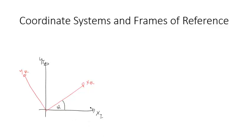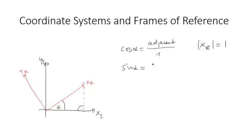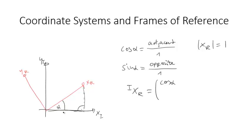Let's say there is an angle alpha between the two x-axes. Now you have a triangle with a right angle here, and you can write down the relationships. Cosine of alpha is the adjacent divided by the hypotenuse, which is of length 1 because these are unit vectors, so |xr| is 1. And sin(alpha) is the opposite divided by the hypotenuse, which is also 1. So I can say that the vector xr expressed in coordinate system I — I put a superscript I in front of it — equals [cos(alpha), sin(alpha), 0], where 0 comes from the fact that xr and zi are coincident on the z-axis.